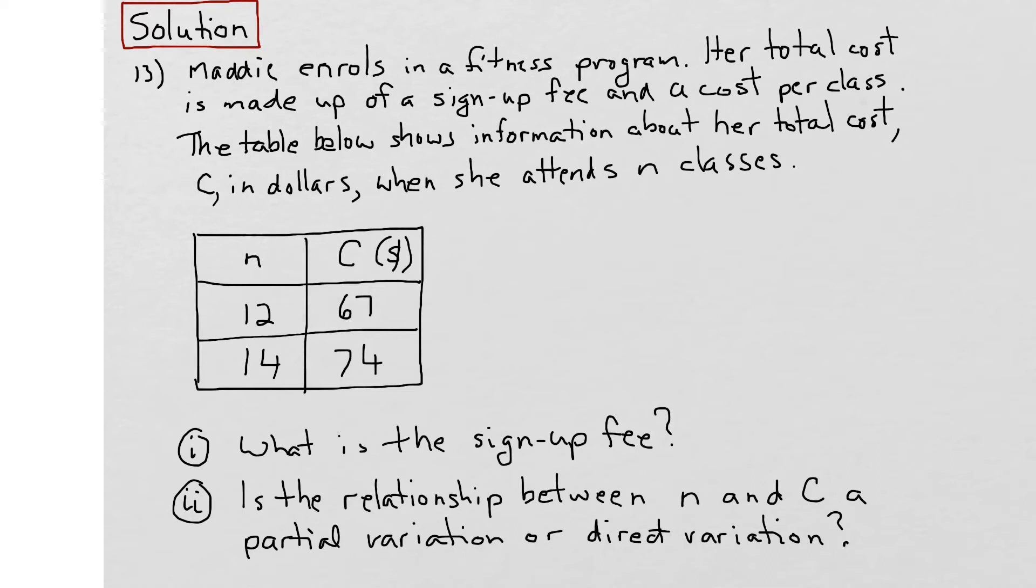The first thing to do would be to figure out an equation for this relationship. So we know that the total cost C is equal to the sign-up fee, which I'll call F, plus the cost per class, which I'll call V for visit, times the number of classes that Maddie attends, n. Now when we look at this graph, we can actually see that it's in the form y equals mx plus b.